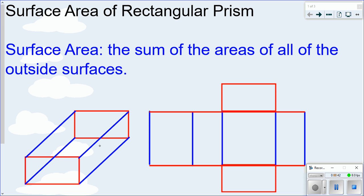Typically the first time you learn about surface area, they teach you about nets. A net is where you basically tear the box open and lay out all its pieces. Here are the two end pieces — if you fold those up and fold this over, it would create the box. The box has six sides: a top, a bottom, a right side, a left side, and a front and a back. If you found the area of each of those pieces and added them together, you would get the surface area. But in this lesson, it's about using a formula to find it instead of using a net.